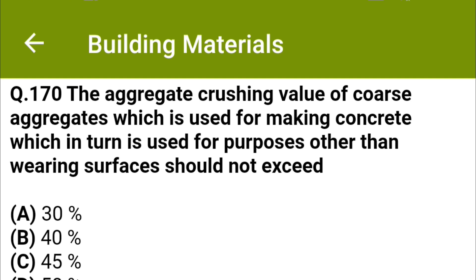The aggregate crushing value of coarse aggregates used for making concrete for purposes other than wearing surface should not exceed: option A 30%, option B 40%, option C 45%, option D 50%. The correct answer is option C: 45%.